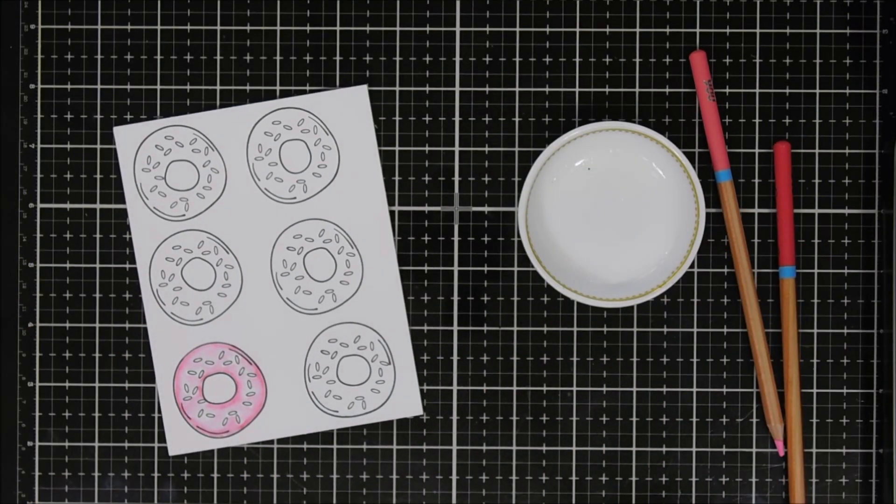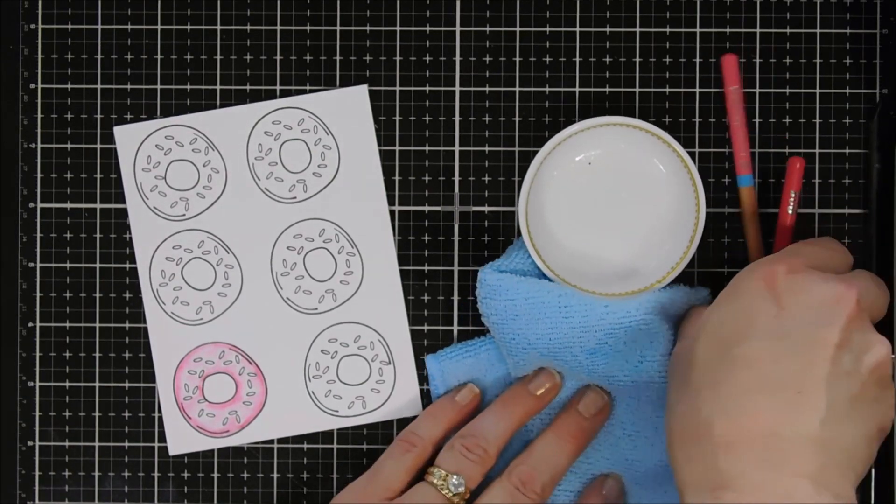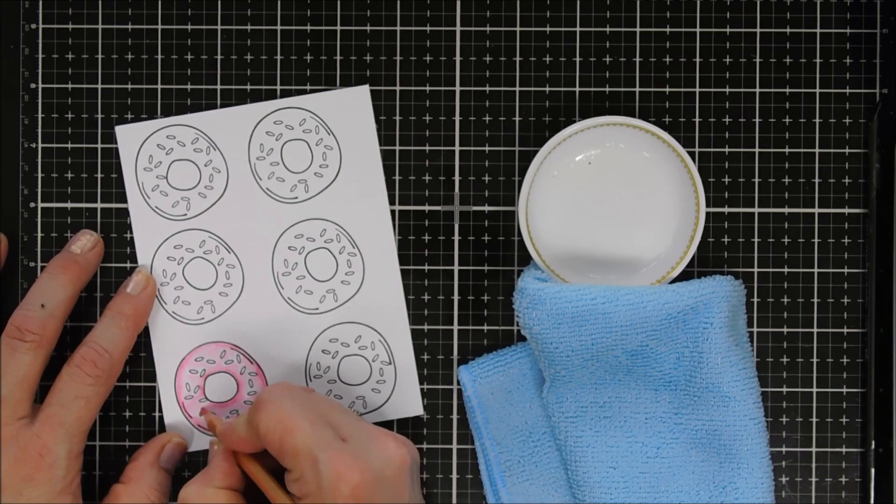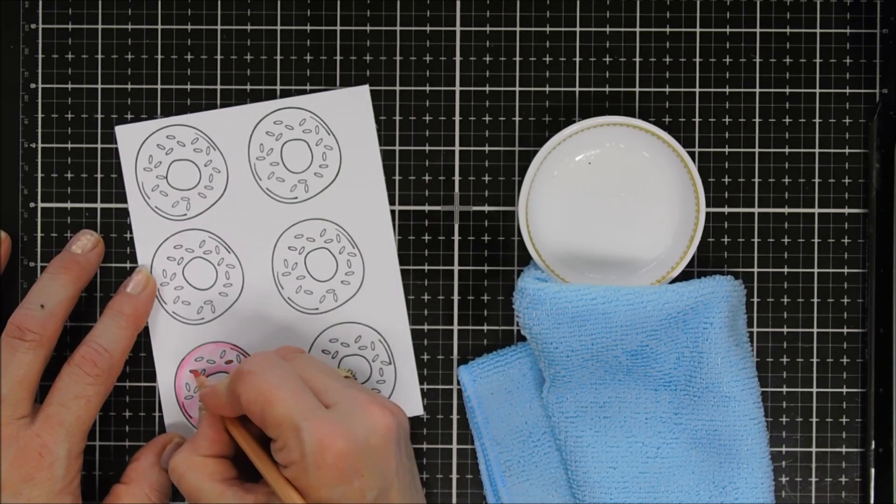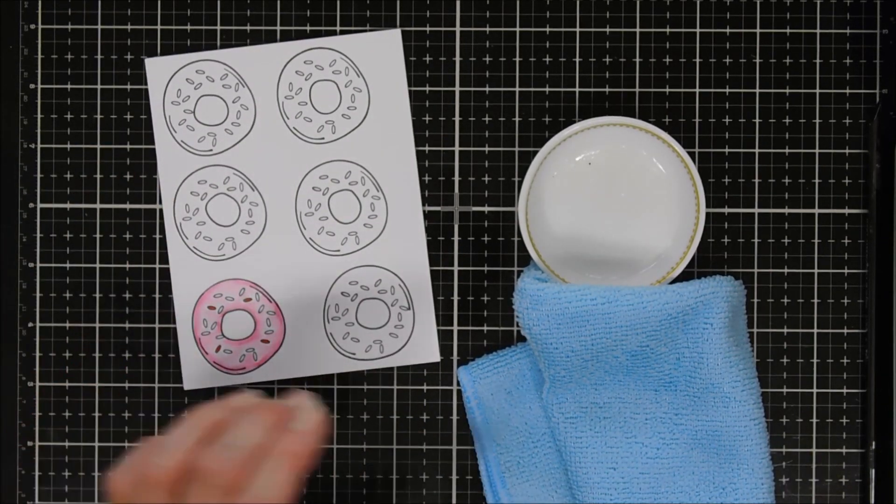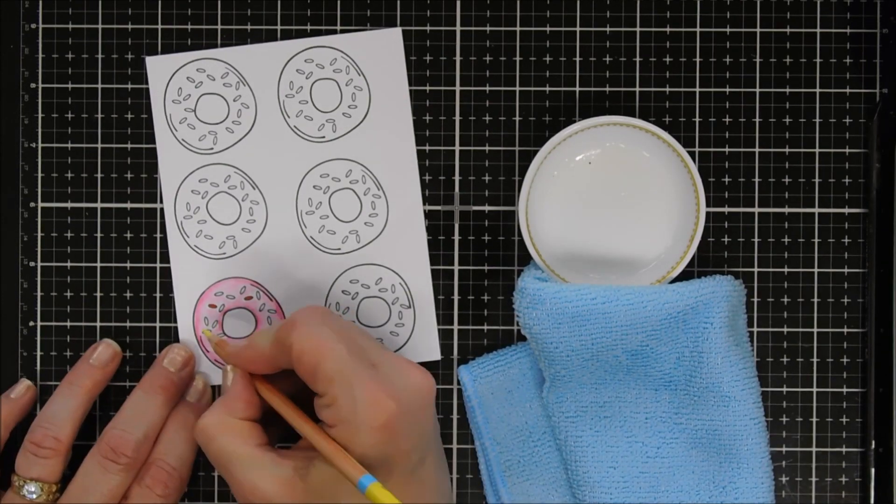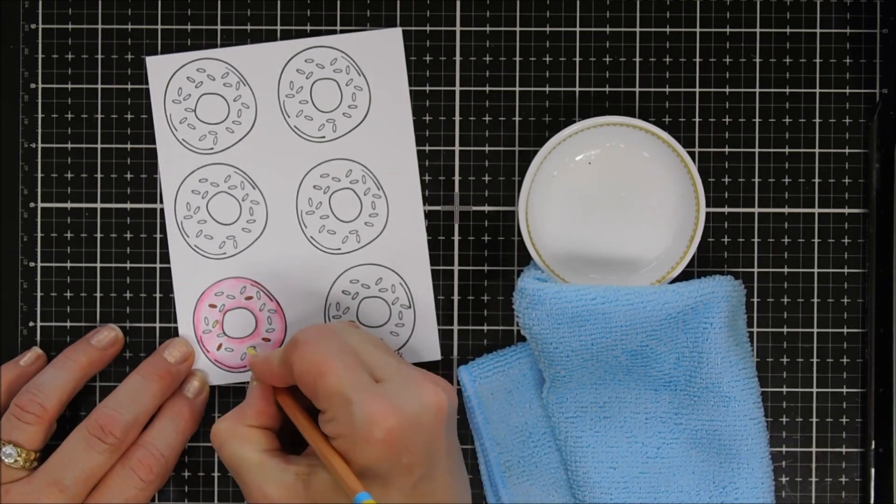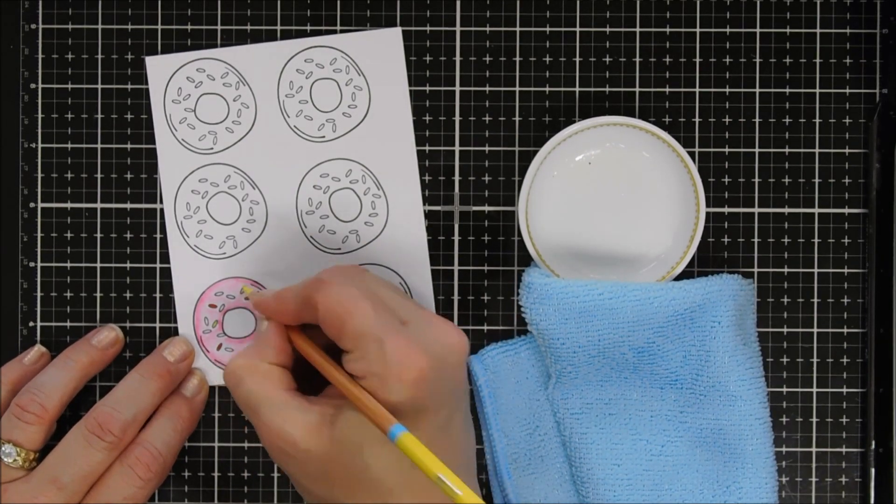Next we're going to use a rainbow of colors to fill in our little sprinkles and I'm not going to add any water to the sprinkles. I'm going to keep them just with the pencil, but I'm only going to show you the coloring for one donut. The rest of the donuts I colored in off-screen just to save a little bit of time, but I did them the exact same way, only I used different colors.